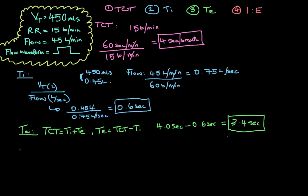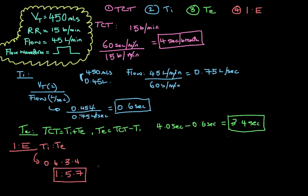Finally, let's calculate our IE ratio — simply a ratio of inspiratory time to expiratory time. We have 0.6 seconds of inspiratory time to 3.4 seconds of expiratory time. Using a calculator: for every 1 part of inspiration, we have 5.666, so approximately 5.7 parts of expiration. Our IE ratio is 1 to 5.7. I chose this example to show that the IE ratio isn't always a whole number like 1 to 5 or 1 to 4 — it can be 1 to 5.7, but the inspiration part is always 1.